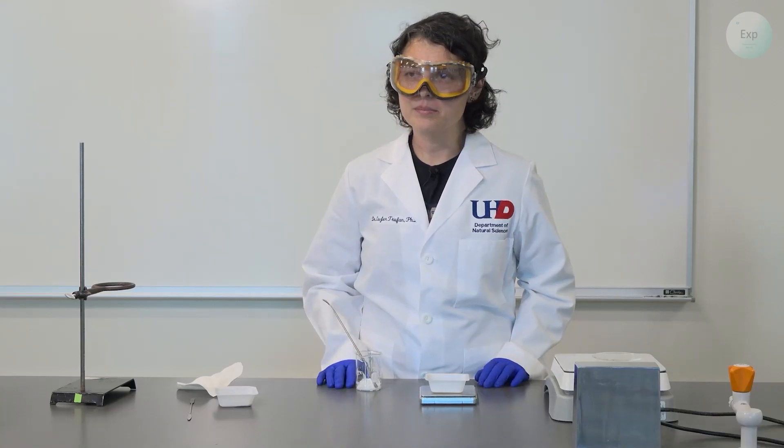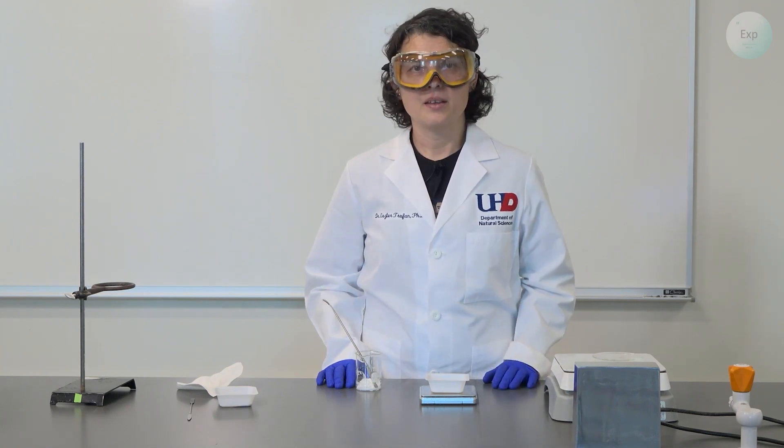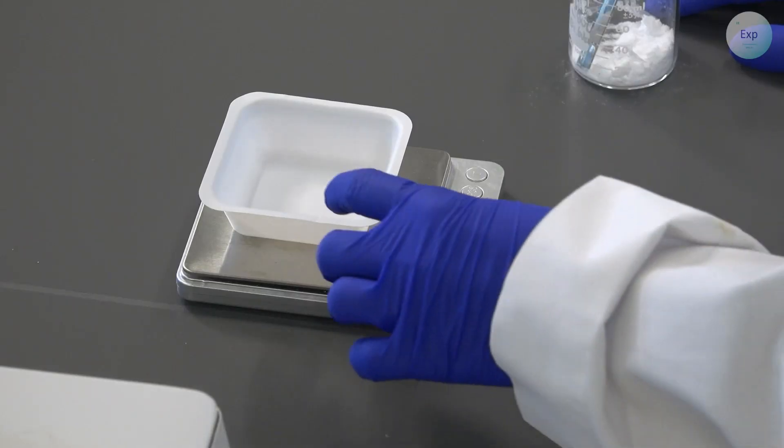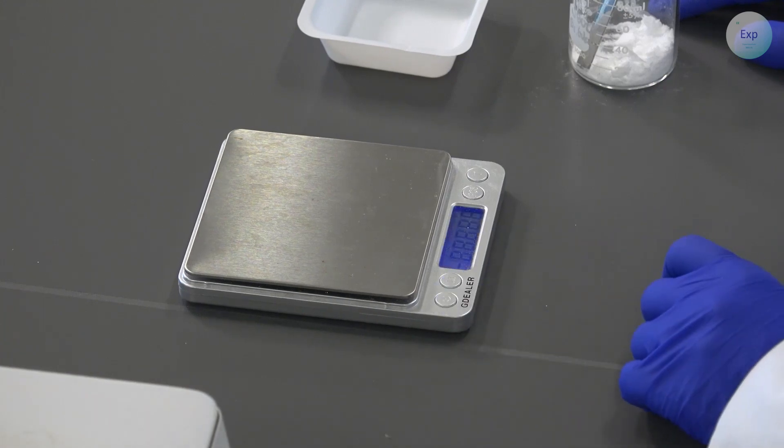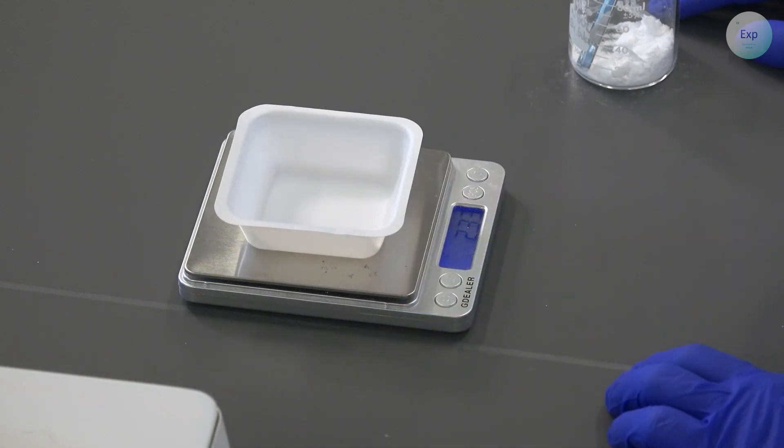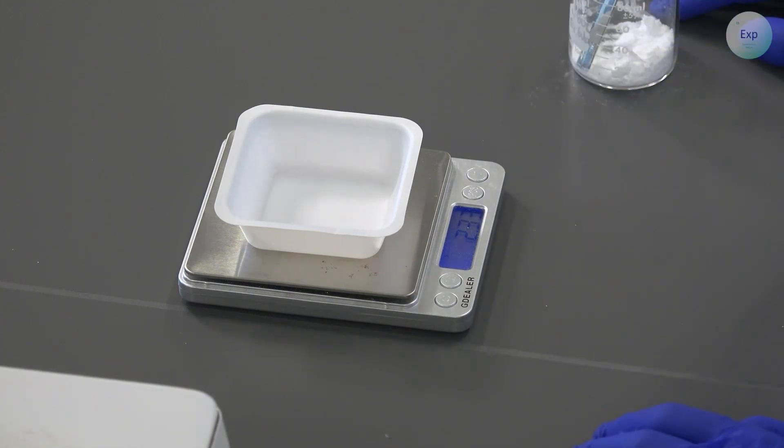The other thing that you may be mindful of is if it takes too long to scrape, then sometimes your scale may turn off in the meantime. So in those instances, it may be better to remove your weighing boat, turn on your scale, tare it, place the weighing boat on top, record the mass of your weighing boat, and then even if your scale turns off, you will know the mass of your weighing boat. And then from the combined mass of the weighing boat with the salt, you can always capture the mass of the salt.